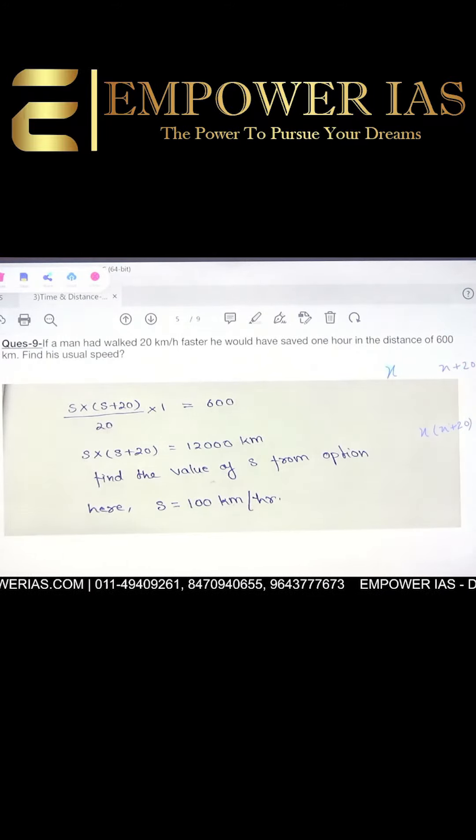There was no problem here. So now how much time is he going to take? Here x plus 20, because distance upon speed. And here the time will be x, it means that when he has increased his speed, time will decrease.